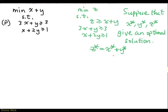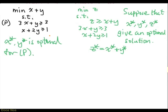The claim is x star, y star is an optimal solution for p. First of all, x star, y star is feasible — it satisfies all the constraints. And the objective function value is also z star, because x star plus y star equals z star. To show that this is optimal, we just have to show that you cannot get anything better for p.